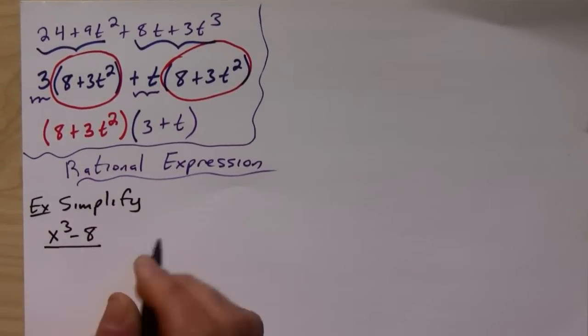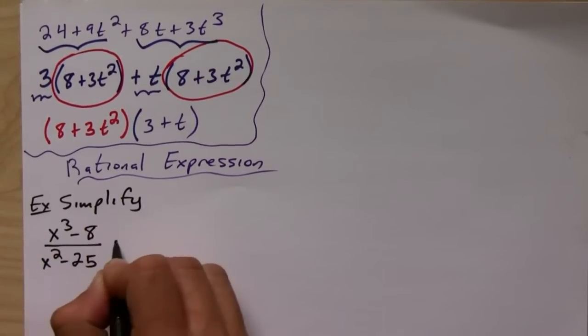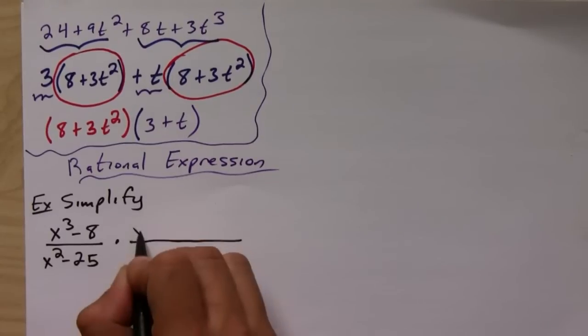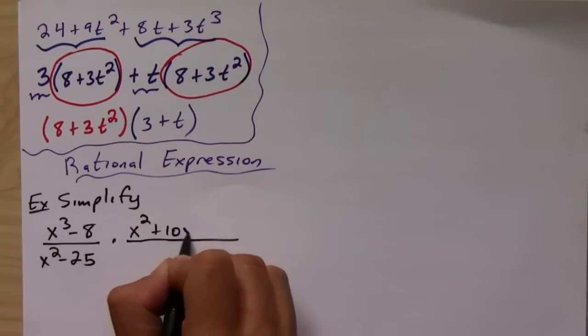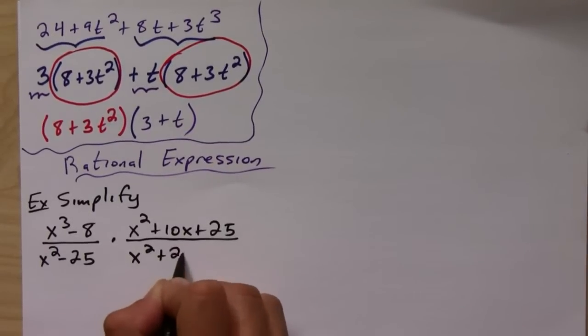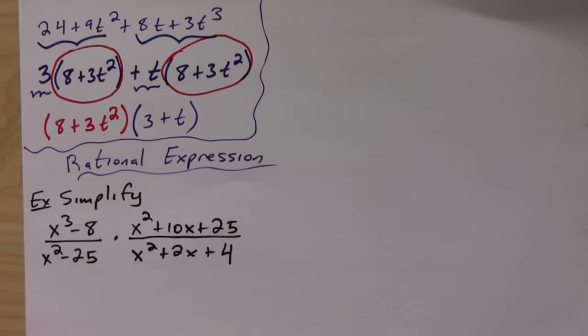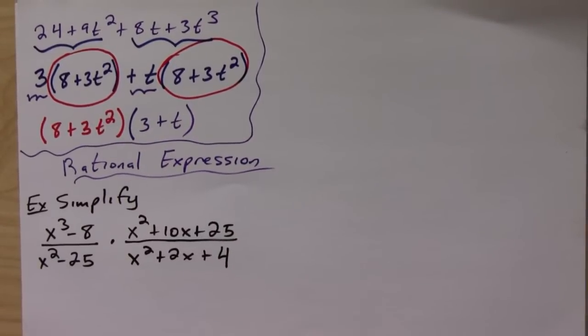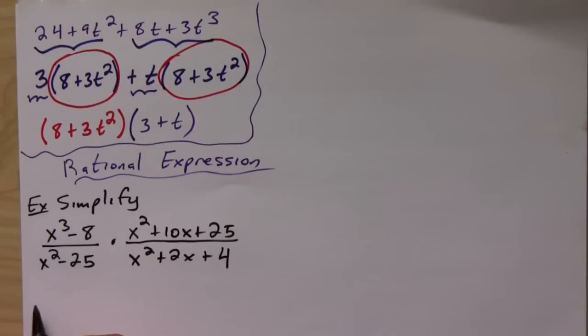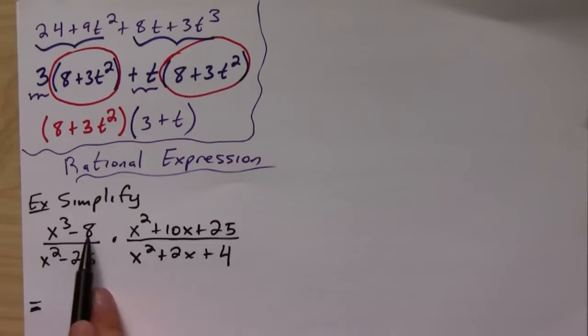...cubed minus 8 over x squared minus 25 times x squared plus 10x plus 25 over x squared plus 2x plus 4. Okay, so all you've got to do, well you're multiplying, so all you've got to do is first...